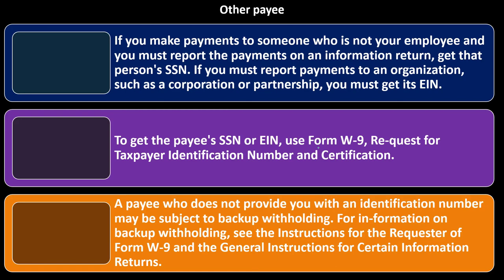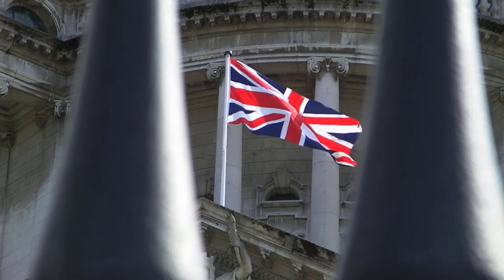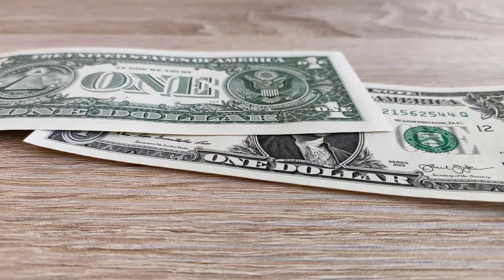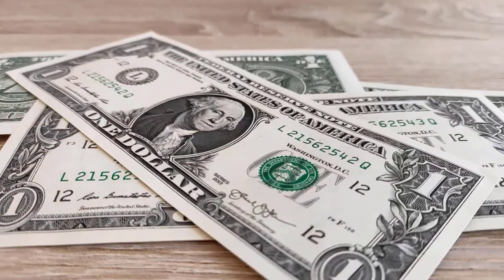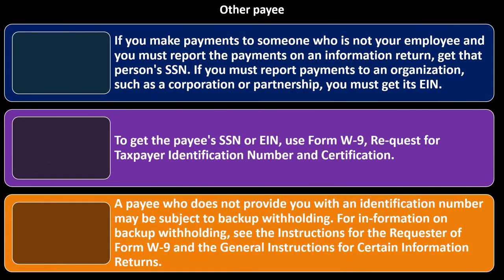If a contractor won't give you their social security number or EIN, then you might not be able to get it. In that case, the IRS may require you to withhold a portion of the payment and give it to the government on their behalf — this is backup withholding. This could upset the contractor, especially if they don't understand why you're asking for their number. You want to get that settled up front and make sure everyone knows the requirements before the deal is done.